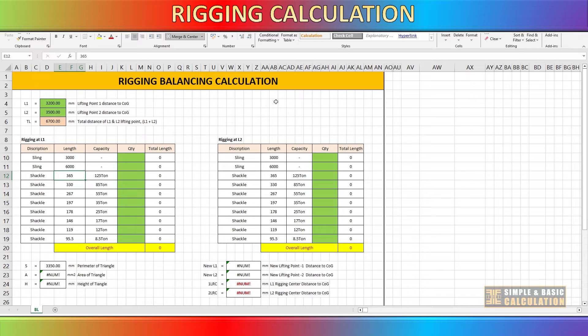The data in this spreadsheet for shackles is based on Crosby catalog. Upon entering all the values, the program will automatically compute the rigging center line distance from the cargo center of gravity.